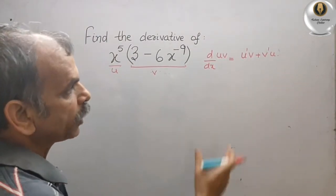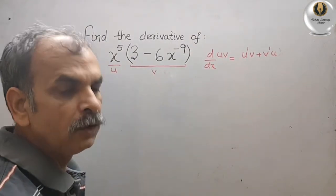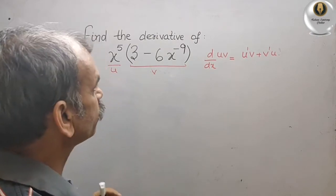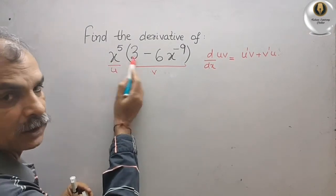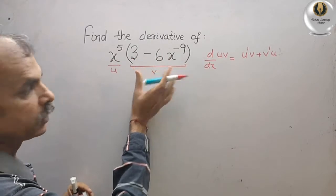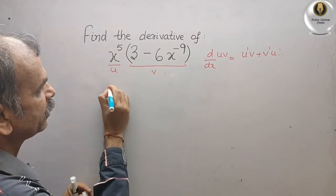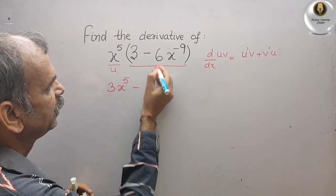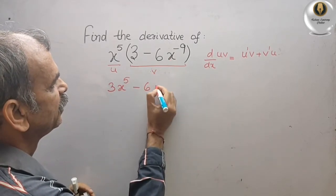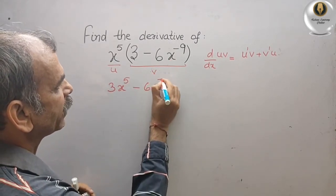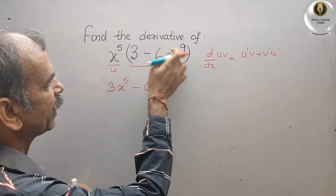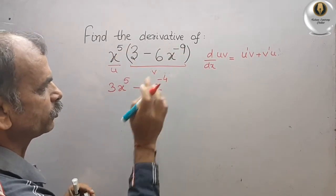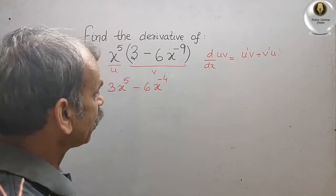You can solve by this also, or otherwise you have to just multiply it and solve it. What you will get? 3x to the power of 5 minus 6x to the power of minus 4. Minus 9 and 5 is minus 4.